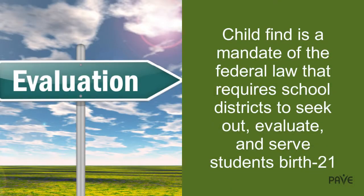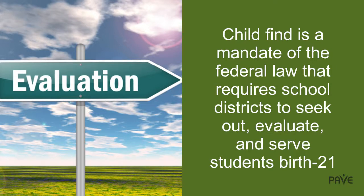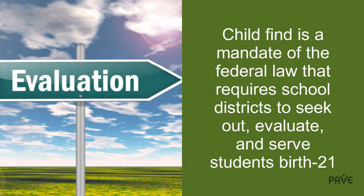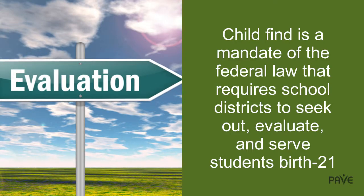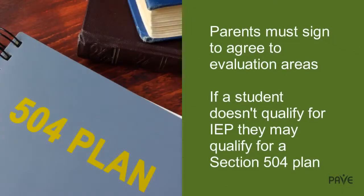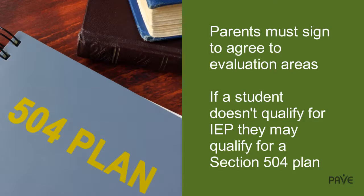The process begins with evaluation. If you have concerns about your student's learning, or they have a known disability impacting them from birth, request an evaluation from Child Find at your school district. The request must be made in writing and begins a timeline to determine if they will evaluate and what the individual strengths and support needs are. Not everyone will be evaluated, and you have a right to disagree with the school's decision to evaluate or not evaluate. If an evaluation is recommended, a parent must sign and agree to the evaluation areas before the process begins.